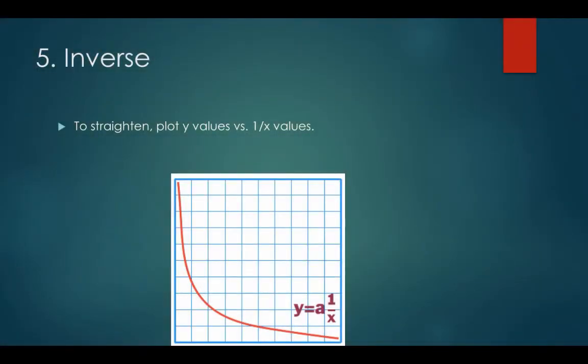The inverse graph has a line of best fit that looks like a steep ski hill. The line quickly drops downwards and then gradually flattens out near the bottom. The algebraic equation which best models this graph is y equals a times one over x. This graph can be straightened out by plotting y versus one over x, or x to the power negative one.